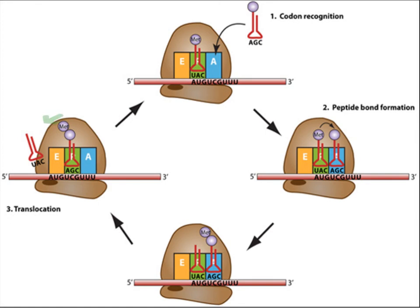The tRNAs in the P site and the A site shift over and the next amino acid is added to the growing polypeptide chain. This cycle repeats until a stop codon is reached.